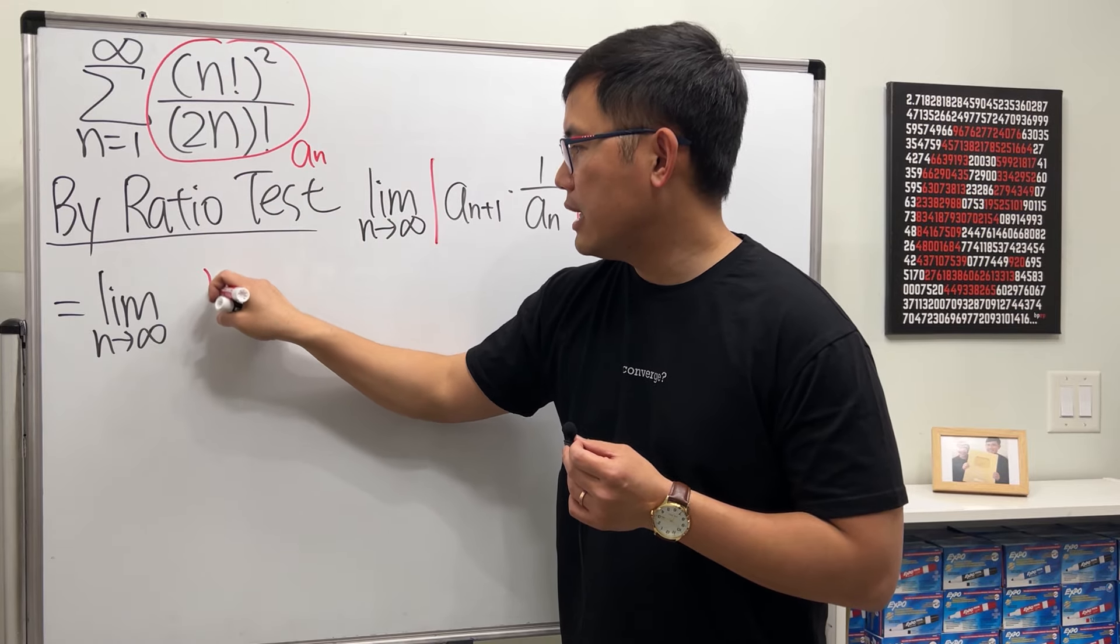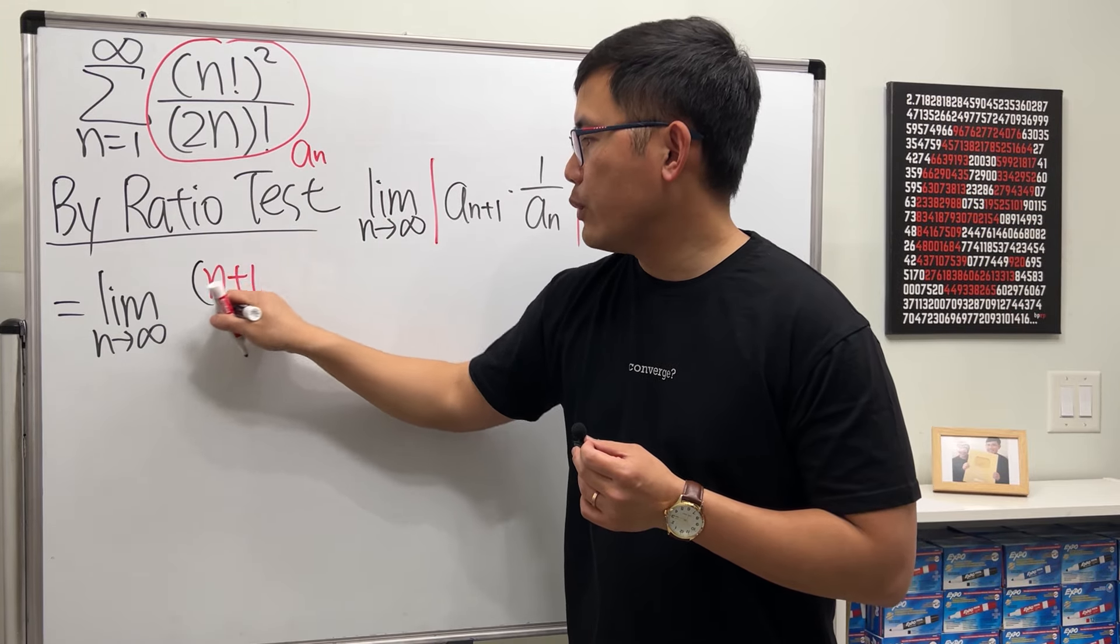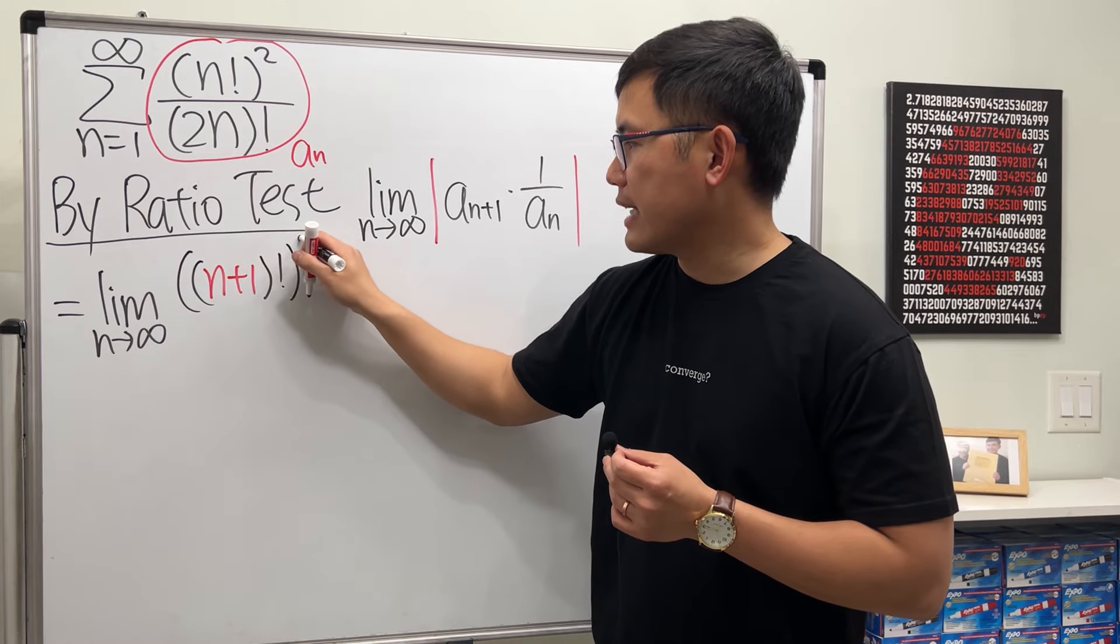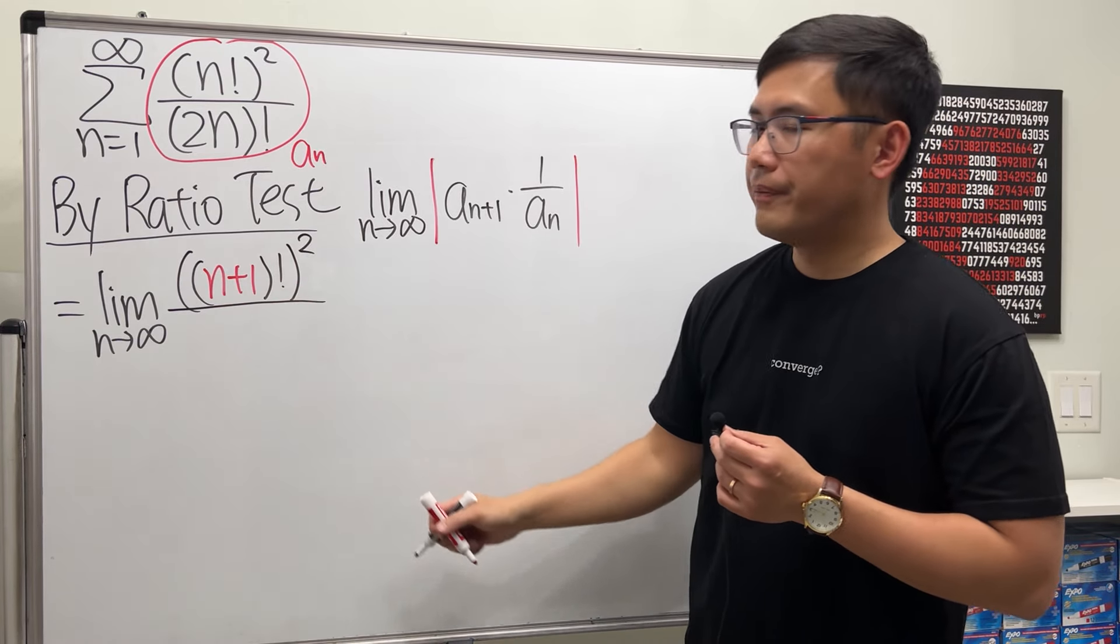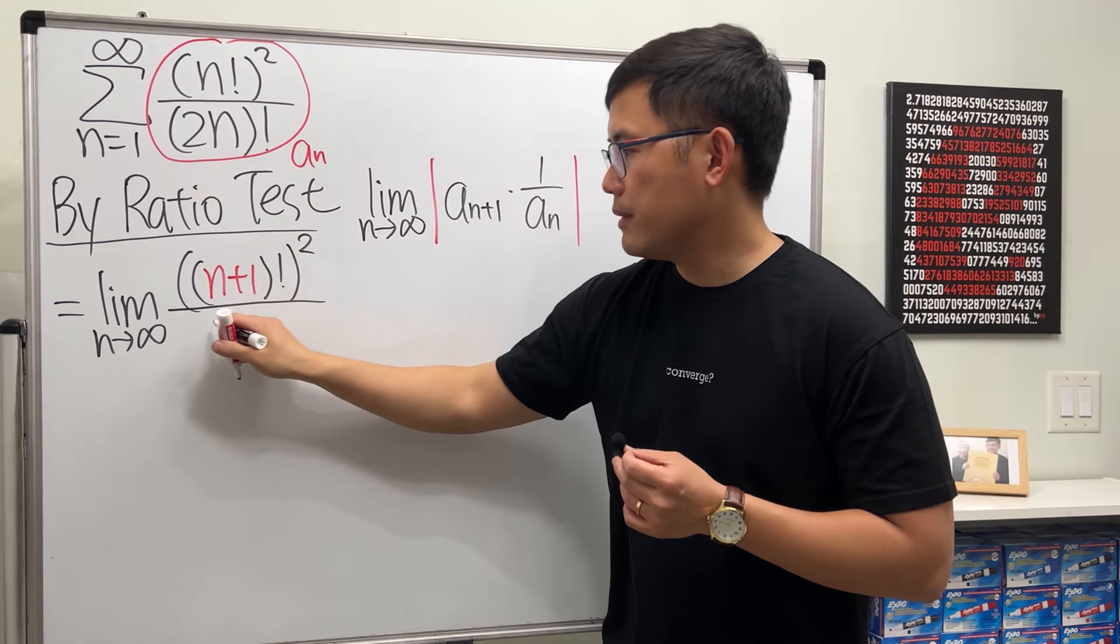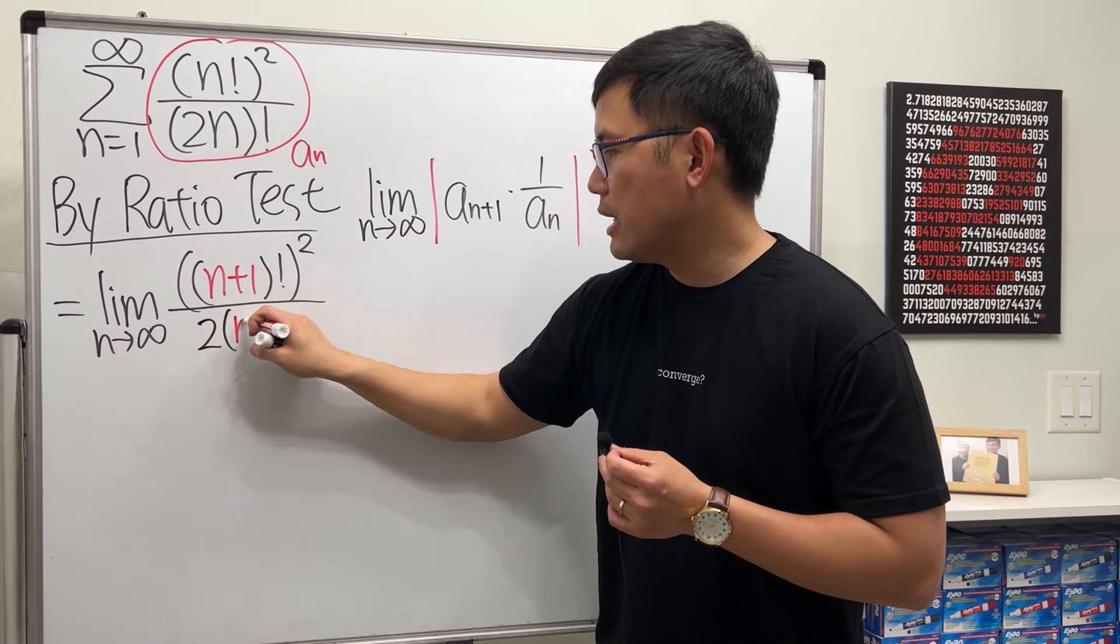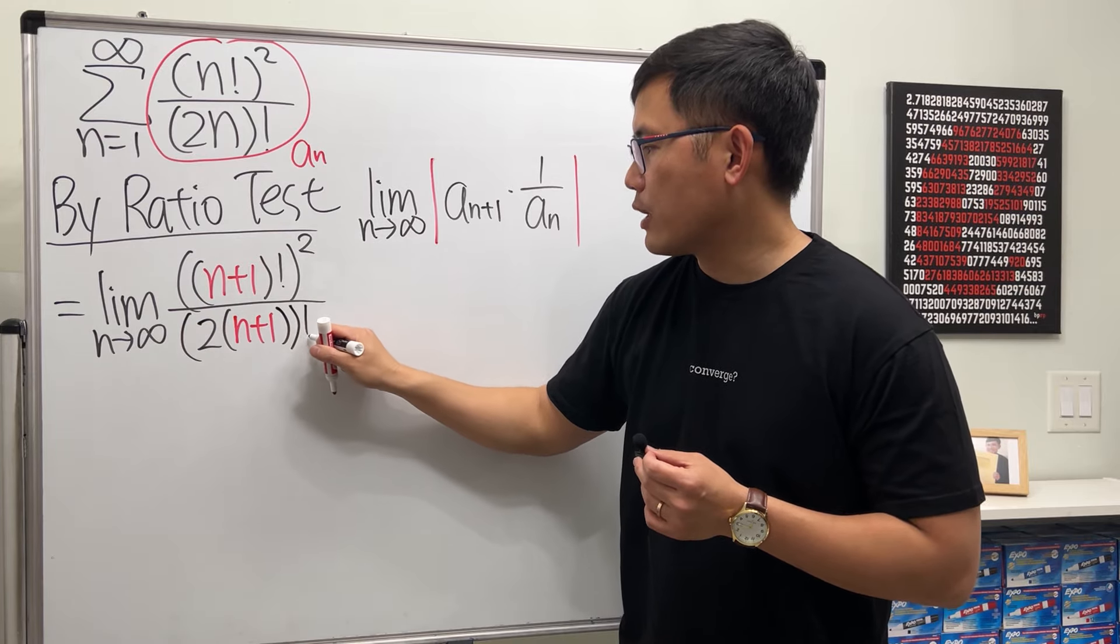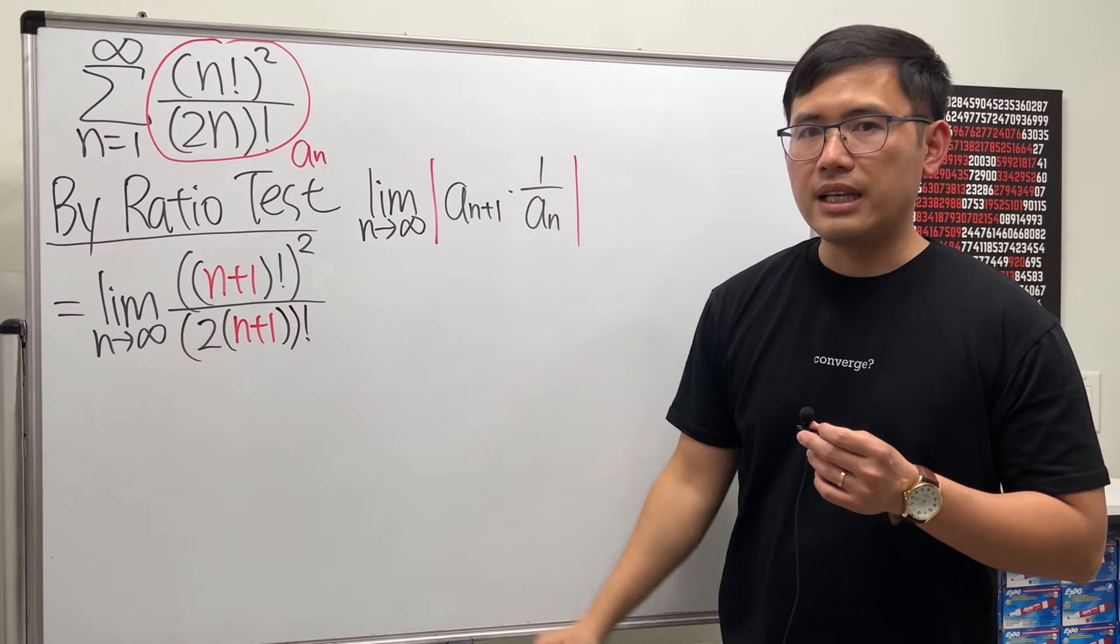a_(n+1): we just put n+1 into this n, so on the top we have n+1 and then we factorial that, and then after that we square that. Over the bottom is 2n, but the n is going to be n+1, so 2 times (n+1), and then after this we factorial this. That is a_(n+1).